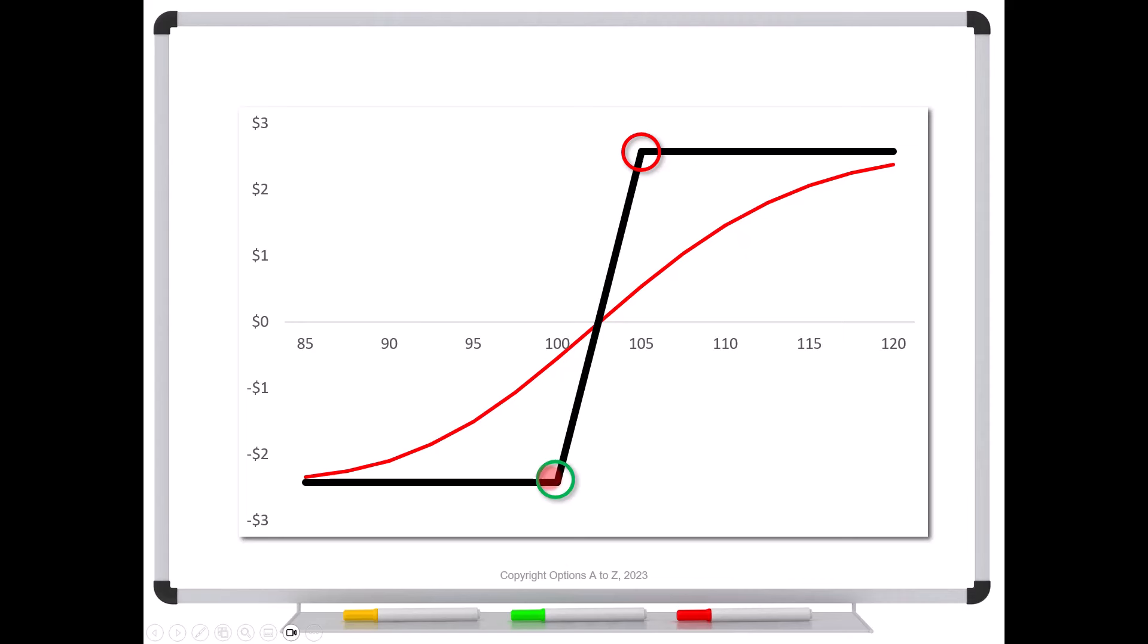But most people just concentrate on this and saying how much of a credit can I get from selling this option? And you need to also consider where do you want the insurance? And this is especially important for vertical spreads because, remember, this black line is how you look at expiration. But you don't look like that today. Today you're on the red line.